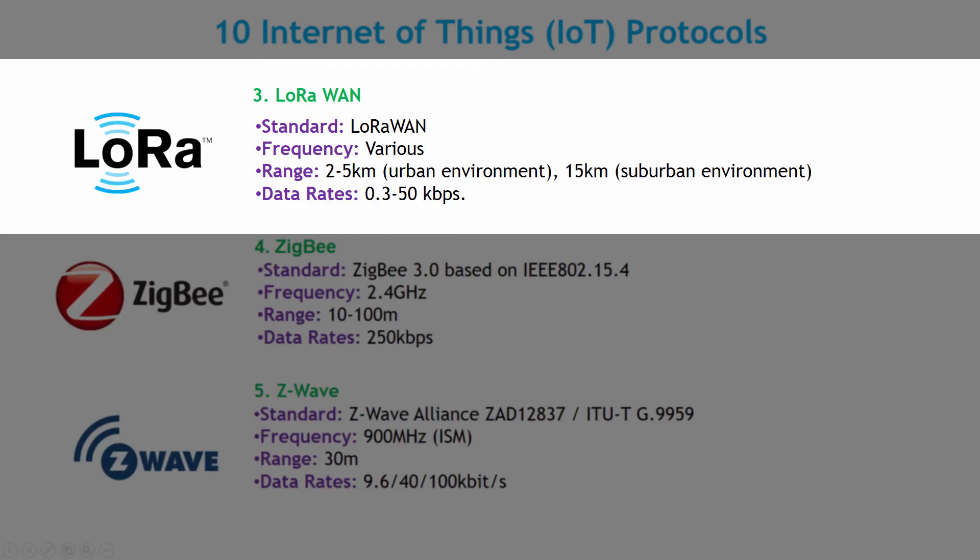The next protocol we are going to discuss is LoRa. LoRa is a long-range radio wide area network designed to provide low-power WAN with features specifically needed to support low-cost, mobile, secure, bi-directional communication in IoT, machine-to-machine, smart city, and industrial applications. It is optimized for low power consumption and supports large networks with millions of devices. Its data rates range from 0.3 kbps to 50 kbps, with physical range around 2–5 km in urban environments and 15 km in suburban environments.